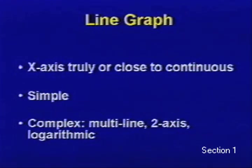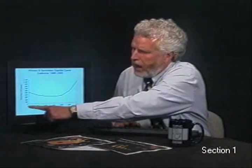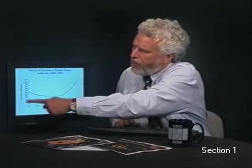Line graphs are a common type of visual display. One of the key features of line graphs is that the x-axis, or the horizontal axis, is usually continuous or quite close to continuous — something like time or age if it's in very small units. Line graphs can be just a simple line, or complex with multiple lines on the graph, or even two different y-axes representing different quantities. Down here is what I'll be constantly referring to as the x-axis, and on the vertical is the y-axis.